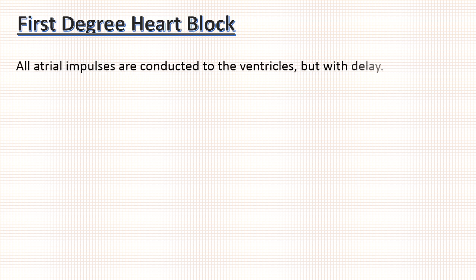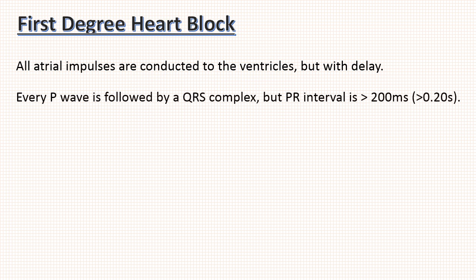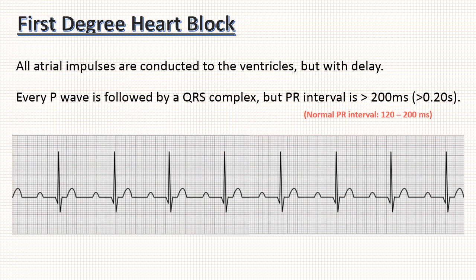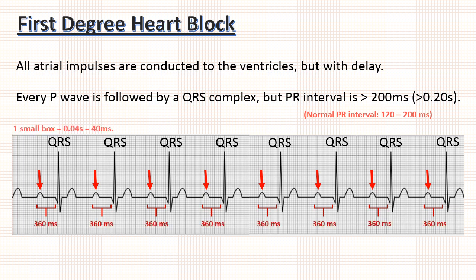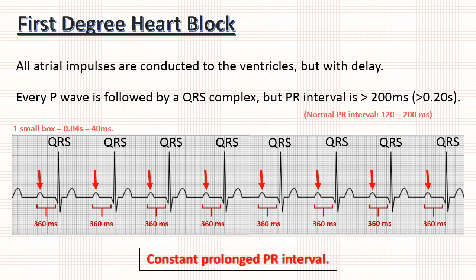First, 1st degree heart block. Here all atrial impulses are conducted to the ventricles but with a delay. Therefore every P wave is followed by a QRS complex, but the PR interval will be more than 200ms. As you can see in this ECG, every P wave is followed by a QRS complex and there is a constant prolonged PR interval — here it is 9 small boxes, which equals 360ms. The keyword for 1st degree AV block is constant prolonged PR interval.